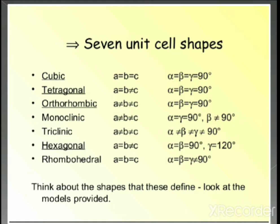In the tetragonal system, alpha = beta = gamma = 90°, but edge lengths a = b, and b ≠ c. In the orthorhombic system, all edge lengths are not equal, but all angles are equal to 90°. In the monoclinic system, all edge lengths are not equal, and alpha = gamma = 90° but beta ≠ 90°. In the triclinic system, all edges are not equal and all angles are not equal to each other.